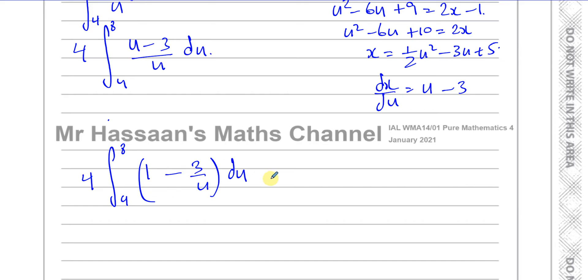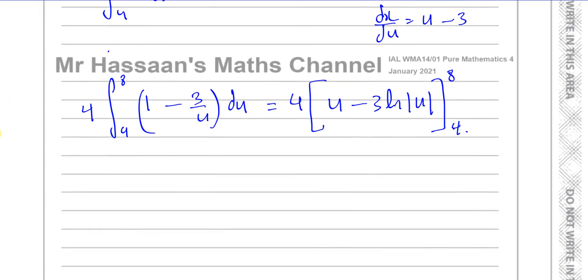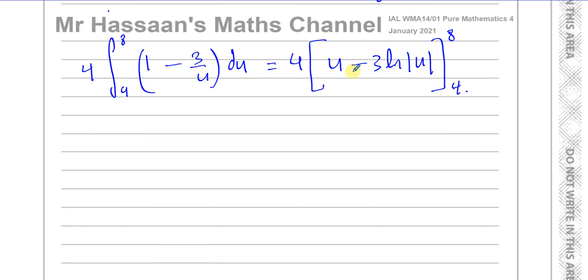And I want to integrate that with respect to u. Now I can integrate that quite easily. I have 4, now I change this to a square bracket instead of an integral sign. Integral of 1 is u. The integral of minus 3 over u is minus 3 times the ln of the modulus of u. And I'm going to put the limits on this side, 8, 4. So now what I have to do is substitute these values into here.